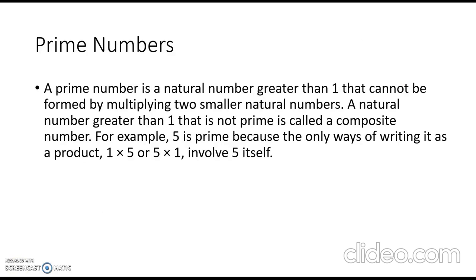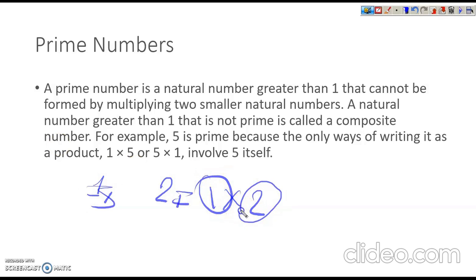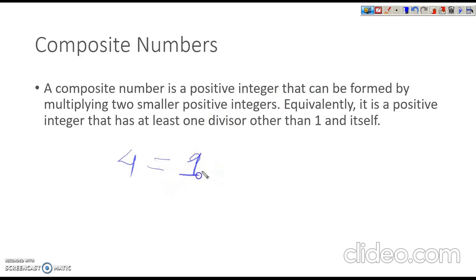Let's look at prime numbers. Prime numbers are natural numbers which have exactly two factors: 1 and the number itself. For example, 2, 5, and 13 are prime numbers. Composite numbers are natural numbers which have more than two factors. For example, 4 has factors 1, 2, 4, and also 2 times 2 — it has more than two factors, so it is called a composite number.